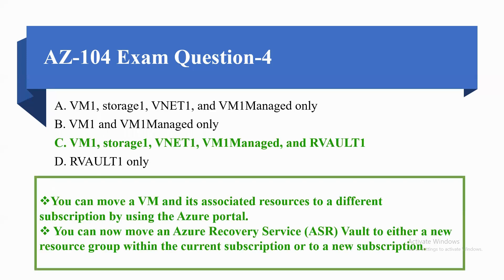The correct option is option C: VM1, Storage1, VNet1, VM1 Managed Disk, and RVault1. This is because you can move a VM and its associated resources to a different subscription using Azure. You can also move an Azure Recovery Services vault to either a new resource group within the current subscription or to a new subscription.